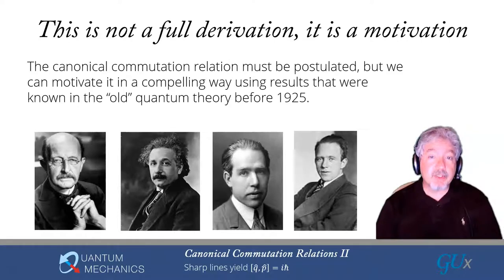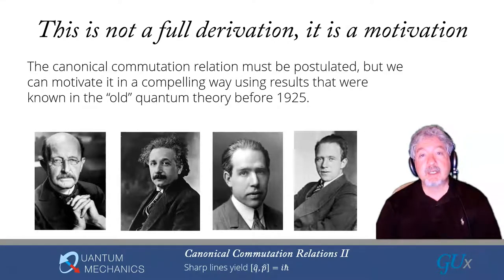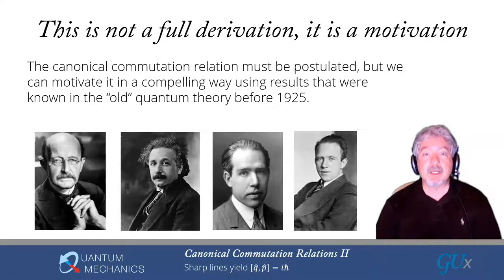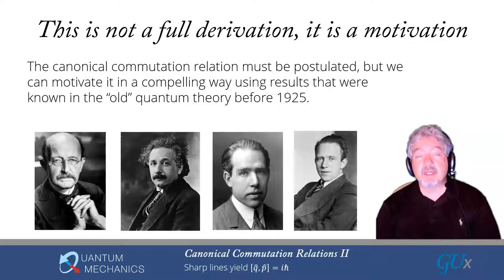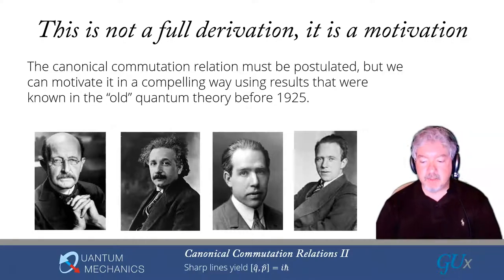Werner Heisenberg, in 1925, made a breakthrough that actually became the dawn of new quantum mechanics. But I've lumped him into the old quantum mechanics here because the philosophy he used was classical mechanics plus something — and he was able to make things work out. We're going to talk about exactly what he did in just a moment.